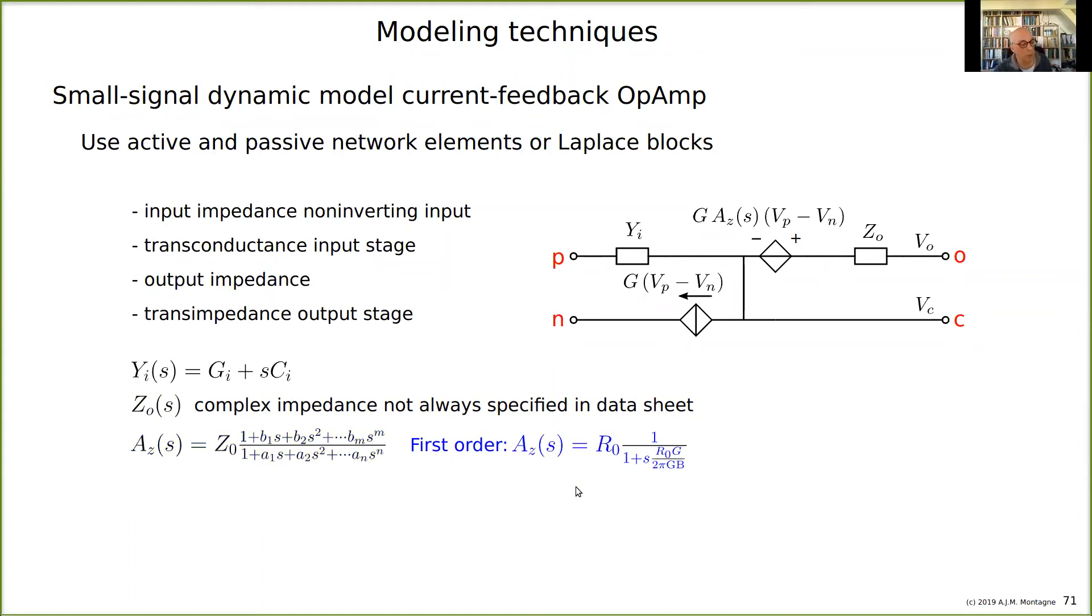Again, you have these poles and zeros in the transfer, and for first order you can say the expression will be like this. We are mostly going to use voltage feedback operational amplifiers, but there are examples in the book with current feedback operational amplifiers so you can see how to use this in practical situations. This is the most important I want to show you about the modeling of operational amplifiers.